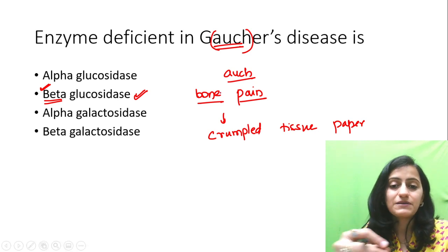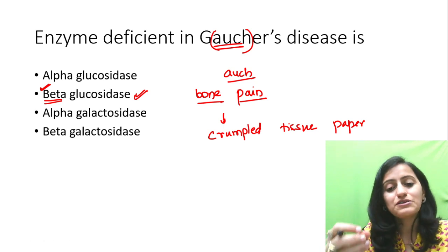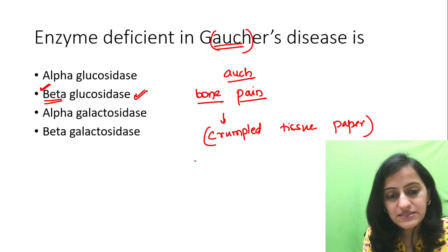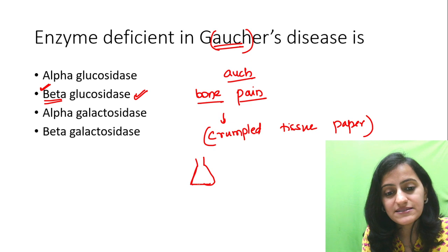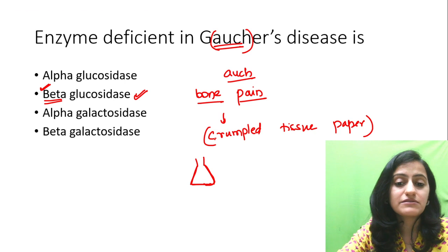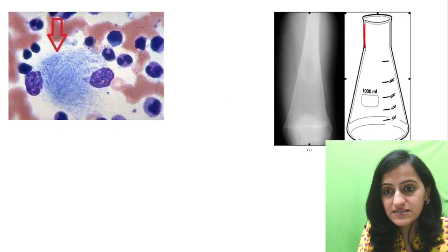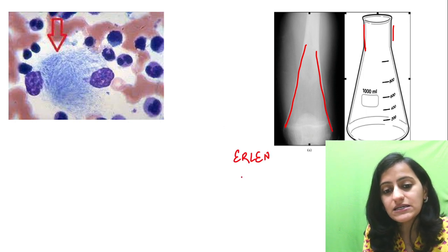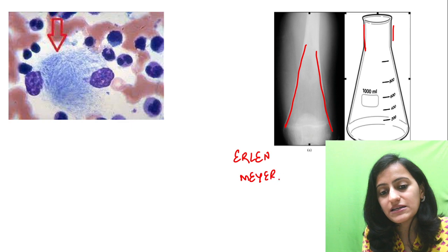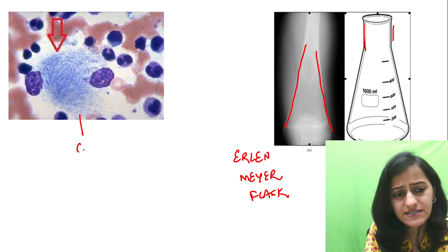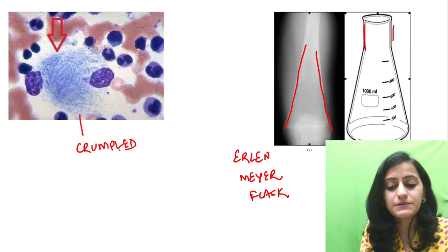Imagine a patient crying with pain and you give tissue paper to wipe the tears — so that is the crumpled or wrinkled tissue paper appearance. What is the appearance of the femur that we see? The femur has a flask-shaped appearance. There is distal flaring of the metaphysis that is called the Erlen-Meyer flask deformity, and this is where we see that crumpled or wrinkled tissue paper appearance.